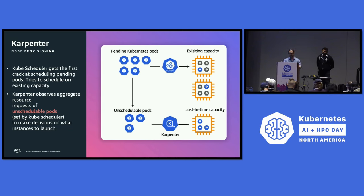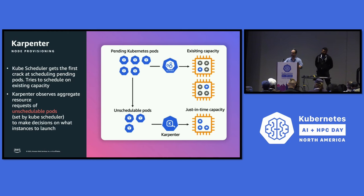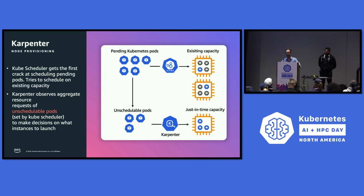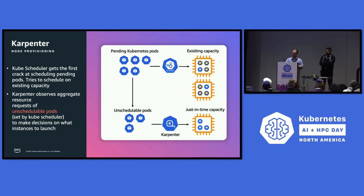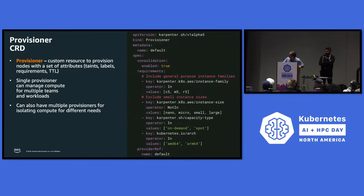Karpenter has a foreground thread that says: I have a bunch of pending pods, I need them scheduled, I can't find a node, so I'm going to look at a rule and get the best instance with the best cost performance possible. Then there's a background thread doing optimization — node consolidation, looking at nodes with empty capacity and optimizing things. So there's a secondary thread in the background doing optimization, which I'll show in a moment.